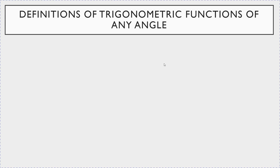So how do we set up and define trigonometric functions for any angle? The basic concept is this: take the Cartesian plane and recall from last lecture right triangle trig — basically how we set up the trigonometric functions in terms of a right triangle.